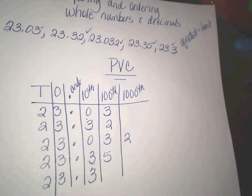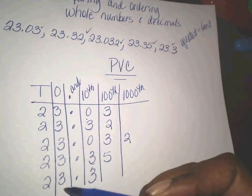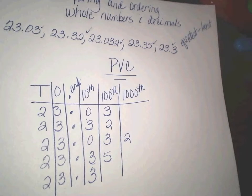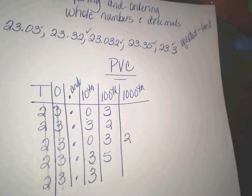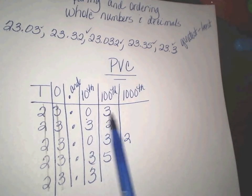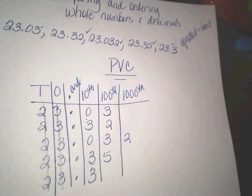We're going to put them in order from least to greatest. Notice that all the numbers in the tens and ones columns are the same, so we can eliminate those — just mark through them with a pencil since we're not looking at those right now. Also notice that some numbers end in hundredths, one ends in thousandths, and one ends in tenths. The place value chart lets us quickly make them all look the same.